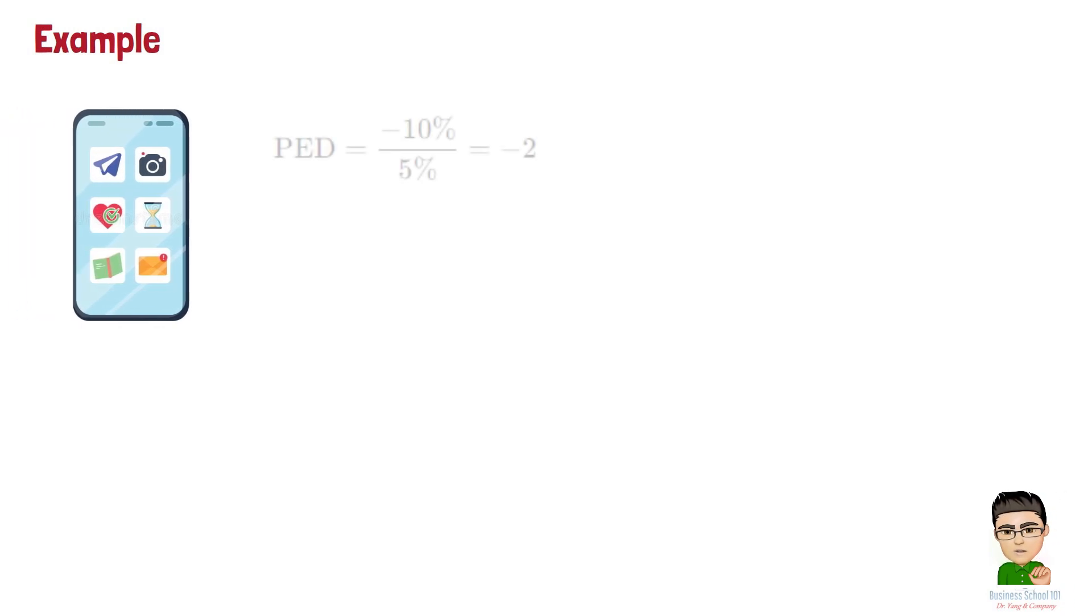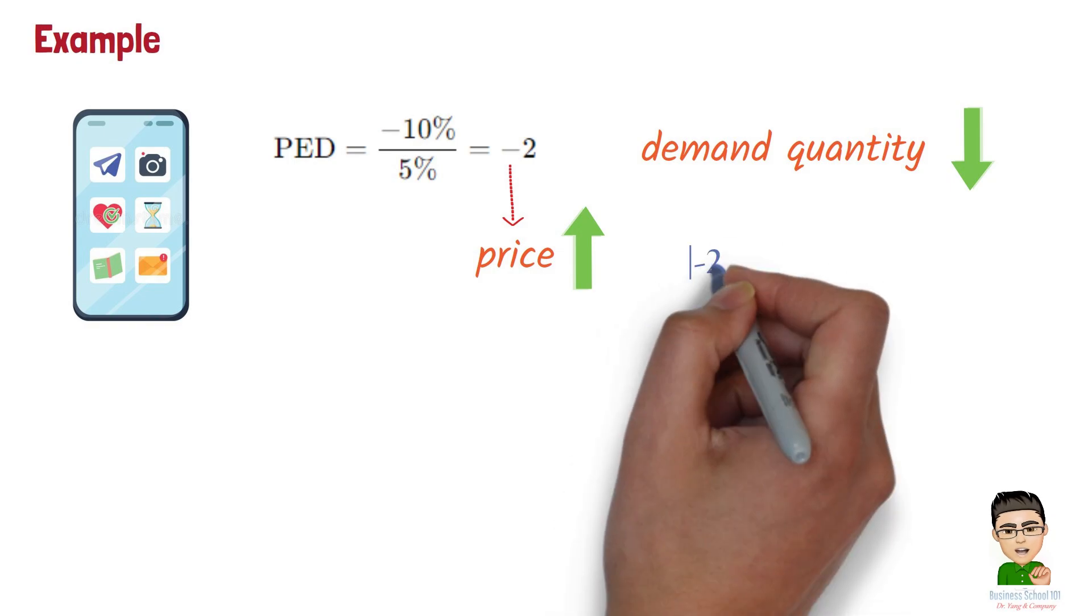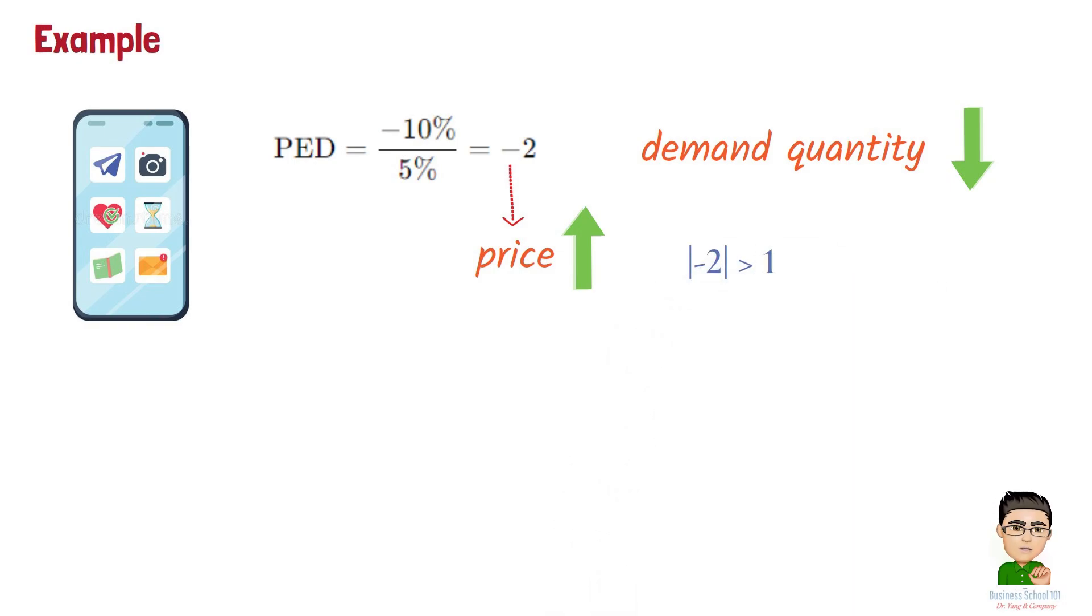For example, suppose the price of a smartphone increases by 5%, and as a result, the quantity demanded decreases by 10%. The PED is as below. This negative sign indicates that as the price goes up, the quantity demanded goes down. Since the absolute value is greater than 1, we say that the demand for smartphones in this scenario is elastic.